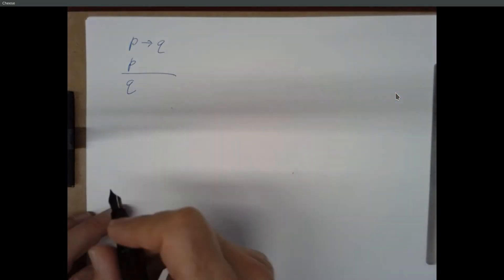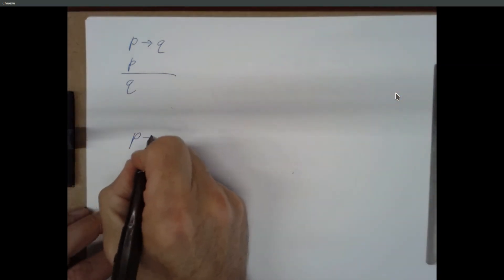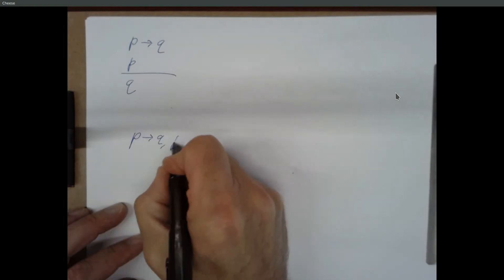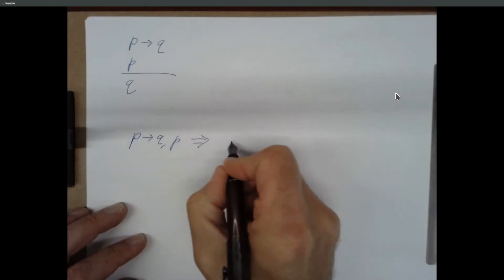And one way we can write that is like this. Given this and this, we can infer that. So, the double arrow really just means this is where we draw the horizontal line.